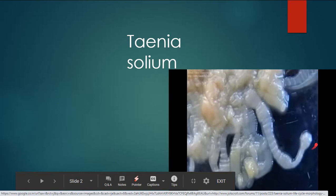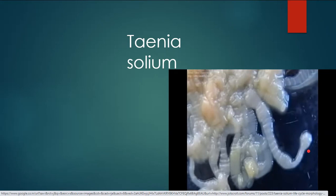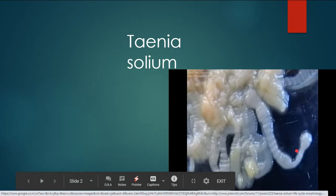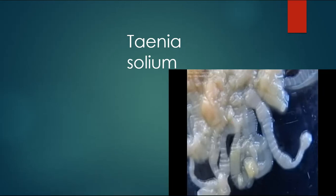The front part of Taenia solium is called the scolex — sometimes referred to as the head, though scolex is the more appropriate term. After the scolex there is a single-segmented neck, and then the whole body, which is called the strobila, spelled S-T-R-O-B-I-L-A. These are the three basic parts of the body of Taenia solium.